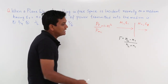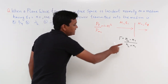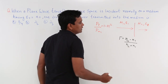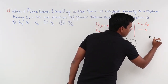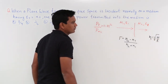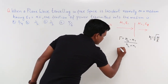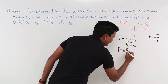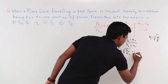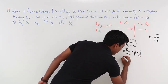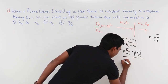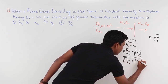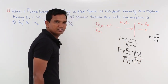The reflection coefficient is given by eta 2 minus eta 1 divided by eta 2 plus eta 1. This is how you find the reflection coefficient in normal incidence. Now, what is eta 2? Eta 2 is nothing but the intrinsic impedance in medium 2, and eta 1 is the intrinsic impedance in medium 1. The general term for eta is nothing but the square root of mu by epsilon.